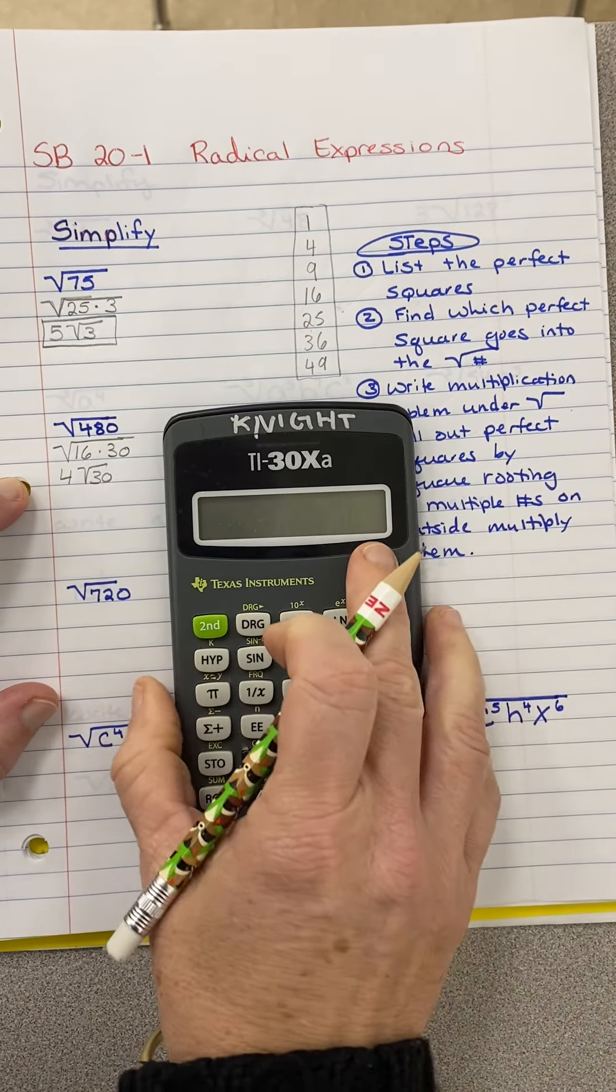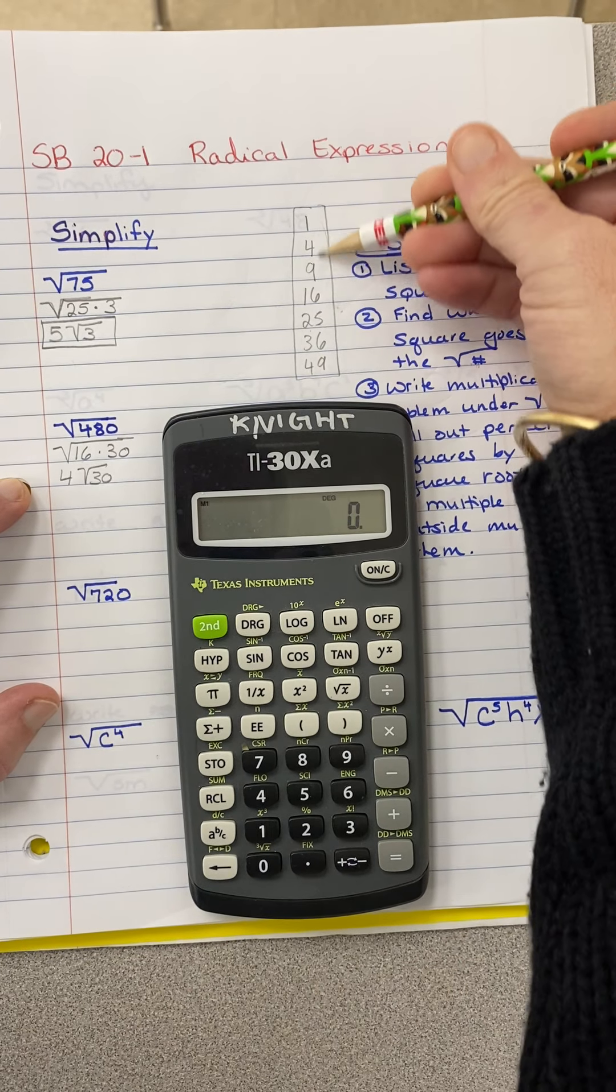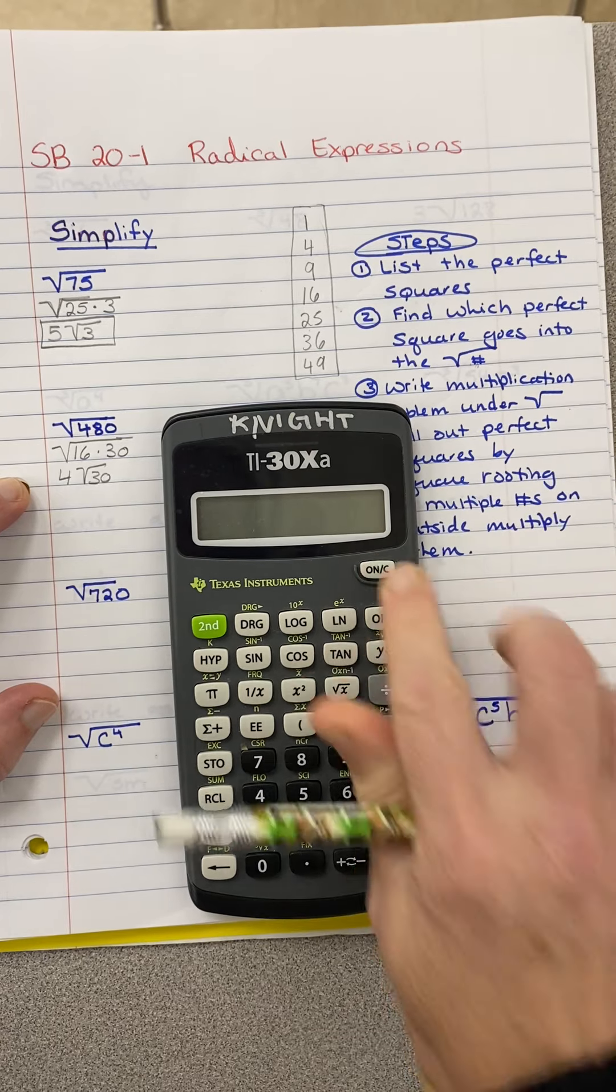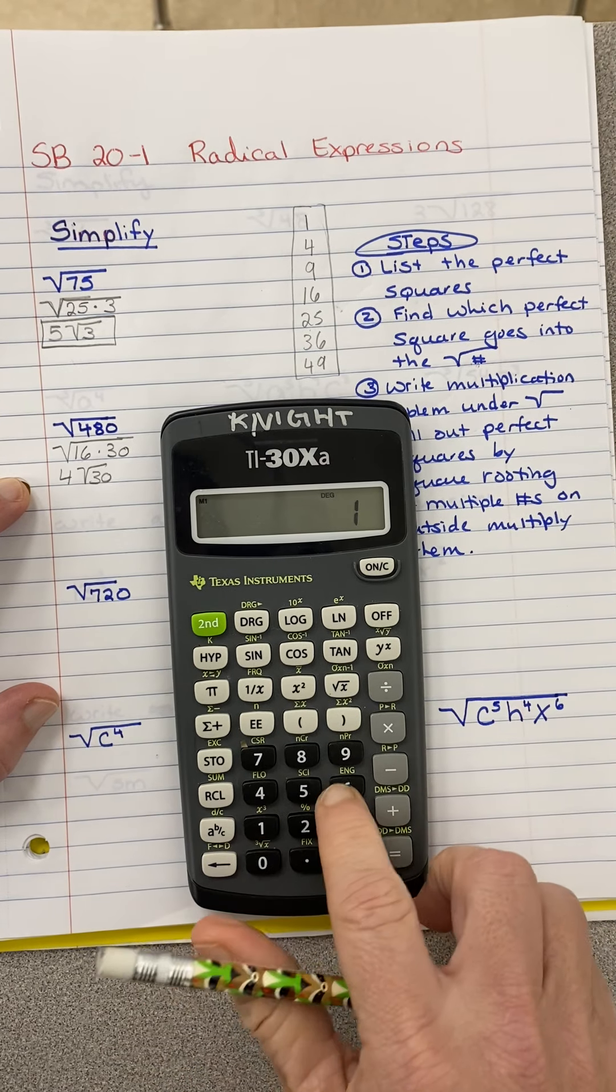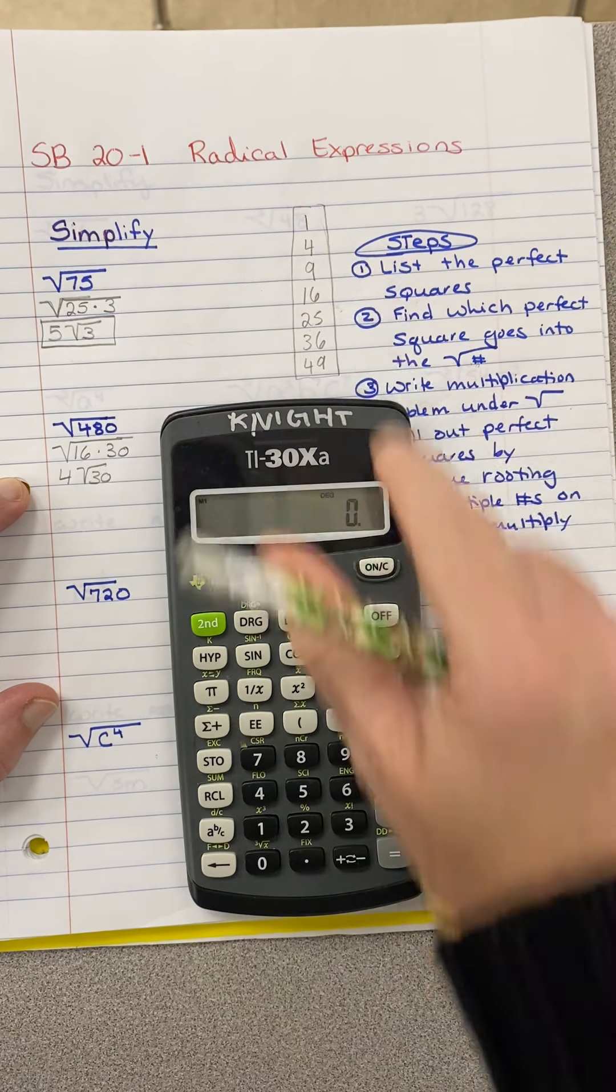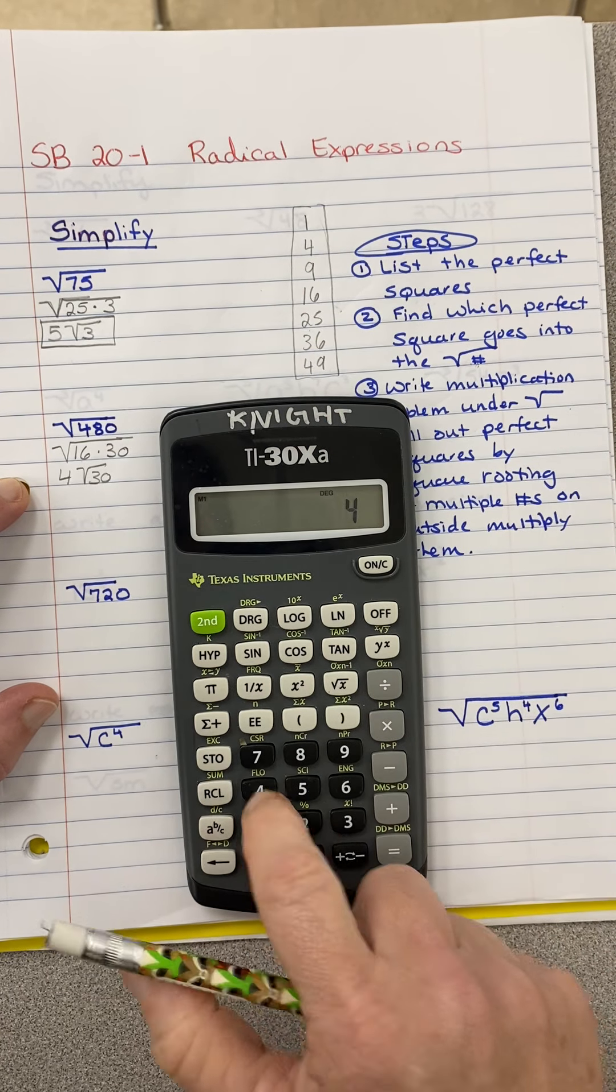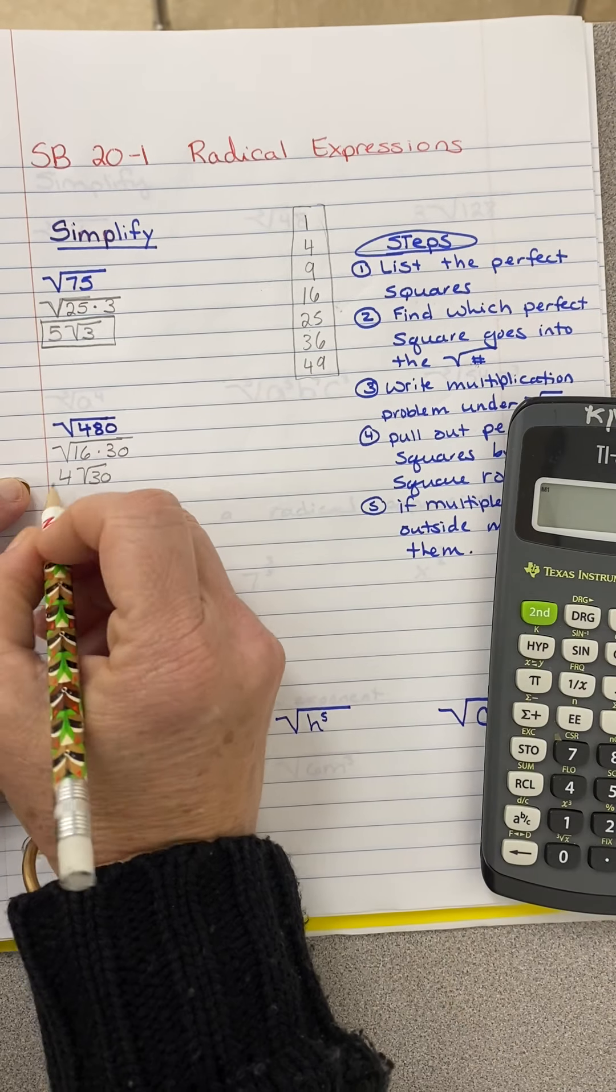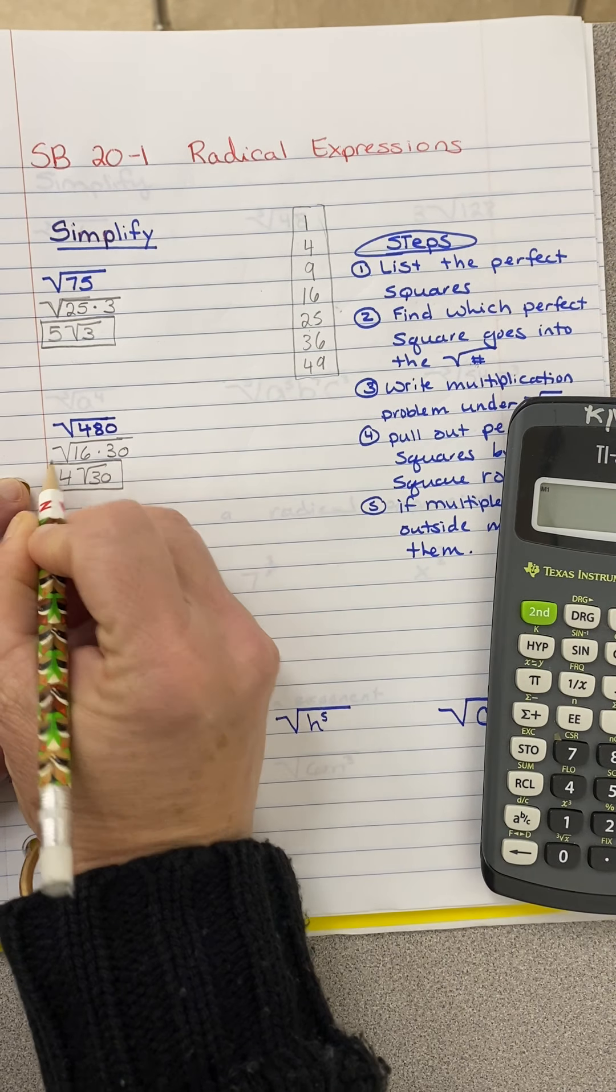Now this seems kind of high. So I'm going to double check and see is there a perfect square that goes into 30? I know it has to be smaller. I don't think 16 goes into 30. Nope, I get a decimal. Nine doesn't go into 30. Nine does not go into 30. So that is my answer, the simplified answer: four radical thirty.